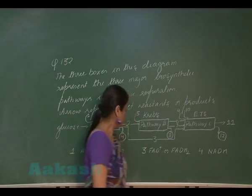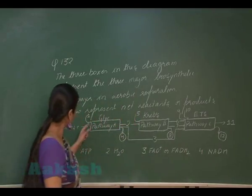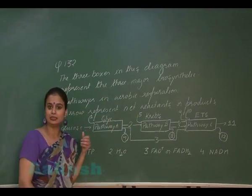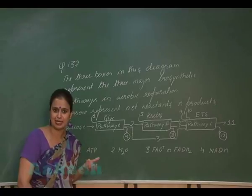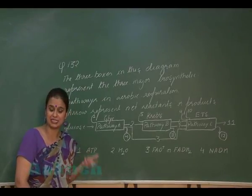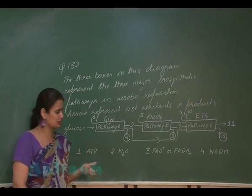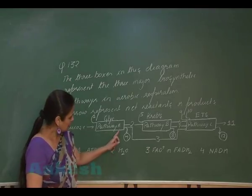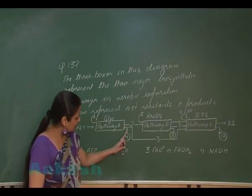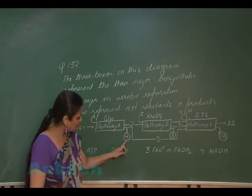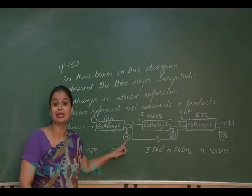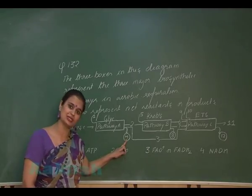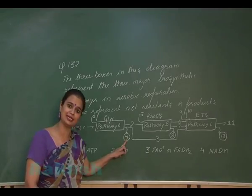In glycolysis, position 1 represents either NAD+ entering glycolysis or ATP which is used for the activation of glucose. Position 4 represents ATP formed through substrate level phosphorylation.